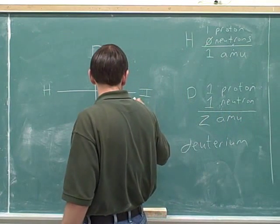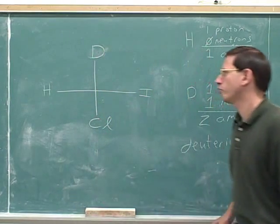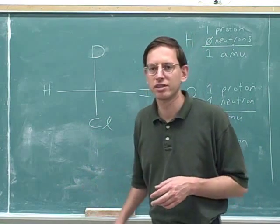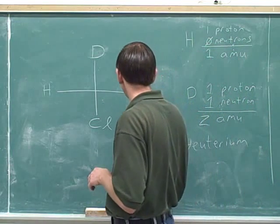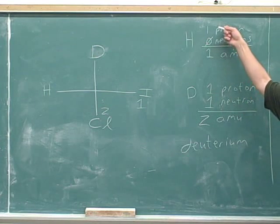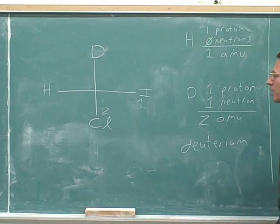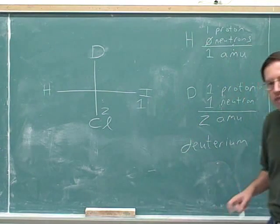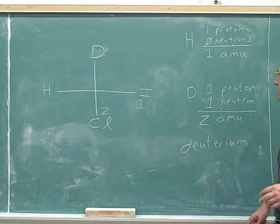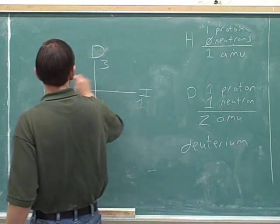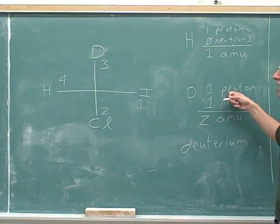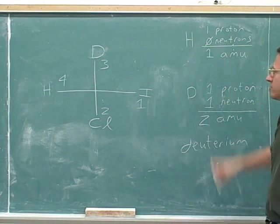Going back to the molecule, it's clear that iodine gets the number one priority, and chlorine gets the number two priority. Both obviously have much higher atomic numbers than deuterium, because the atomic number for deuterium is just one — the same as for hydrogen. Remember, the atomic number is how many protons you have, so both deuterium and hydrogen have an atomic number of one. But when you're tied on atomic numbers, you break the tie by looking at the overall atomic weight. Clearly, deuterium has a higher atomic weight than hydrogen, so deuterium has a higher priority than hydrogen.